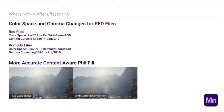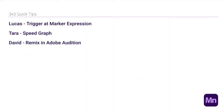That's it for what's new. We'll jump right into our quick tips. We have three people tonight: Lucas is going to talk about an expression for triggering something to happen at a marker. Tara is going to talk about using the speed graph — if you don't use it already, you should, though it can be a little unwieldy. And David is going to talk about using Remix to adjust song length in After Effects. Lucas, you're up.